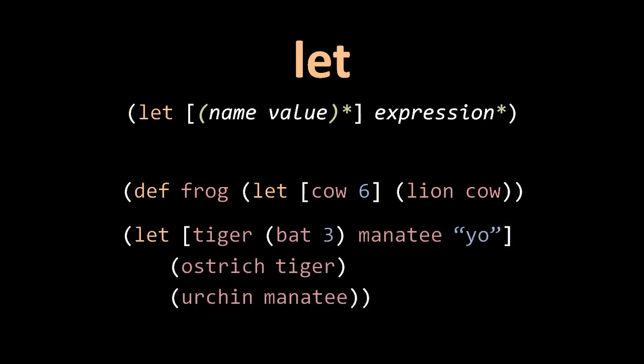In this next example the let body has two expressions: the first is a call to ostrich with the argument tiger, and the second a call to urchin with the argument manatee. Inside the vector we are establishing two names: the name tiger with the value of whatever is returned from bat called with an argument of three, and the name manatee with the value which is just the string "yo". So for the duration of the body of the let, the symbol tiger resolves to the value returned by bat(3) and manatee resolves to the string "yo". The let itself returns the value returned by its last expression, which is the call to urchin with the argument manatee.